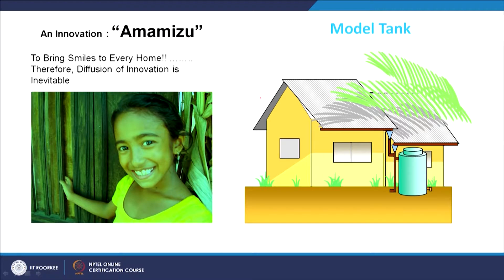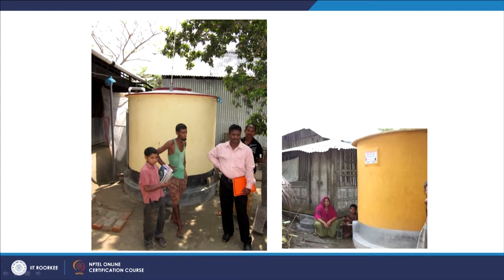That is where an innovation came into the picture — amamiju — which is a Japanese technology that talks about rainwater harvesting. In Japanese, 'ama' means rain and 'mizu' means water. They provide water collection tanks, collect rainwater, store it for 6 months, and then reuse it. This innovation was needed for that particular geographic, climatic, and vulnerable condition. They tried to install it in various rural villages in need of this technology.